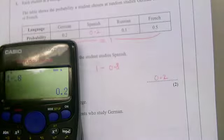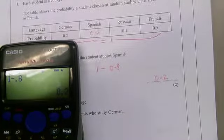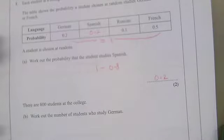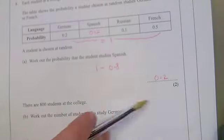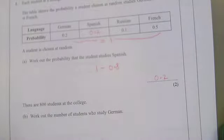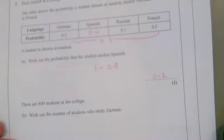I'm going to fill it in the table just so I definitely get the marks. So there are 800 students at the college. Work out the number of students who study German.